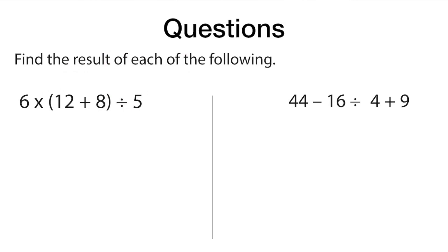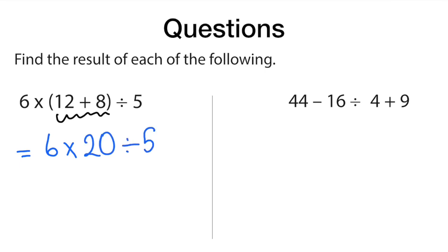Now let's solve some questions. Here, 12 plus 8 is inside the parentheses, so we do the numbers within the parentheses first — 12 plus 8 equals 20. The expression becomes 6 times 20 divided by 5. Multiplication and division are together, so we go left to right: 6 times 20 equals 120, divided by 5 equals 24.